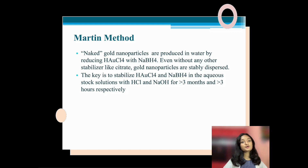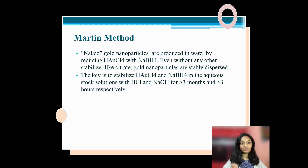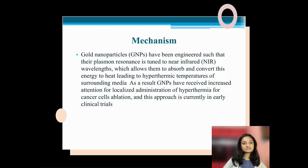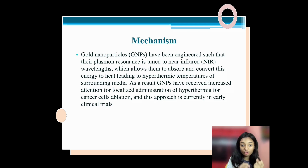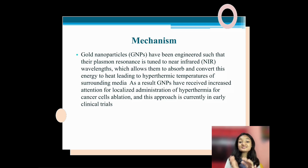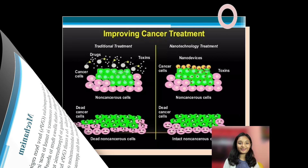The Martin method produces gold nanoparticles in water by reducing chloroauric acid with NaBH4 even without any other stabilizer, as the nanoparticles are stably dispersed. The key is to stabilize chloroauric acid and NaBH4 in aqueous stock solutions with HCl and NaOH for less than three months and less than three hours respectively. The mechanism is that gold nanoparticles (GNPs) have been engineered so their plasmon resonance is tuned to near-infrared wavelengths, allowing them to absorb and convert energy to heat. This leads to hyperthermic temperatures in the surrounding media, and as a result GNPs have received increased attention for localized administration of hyperthermia for cancer cell ablation, currently in earlier clinical trials.